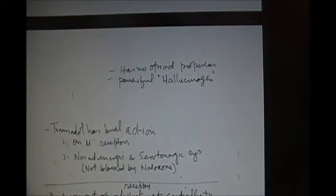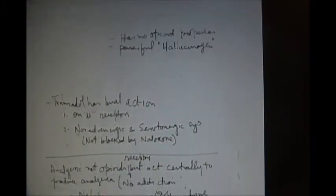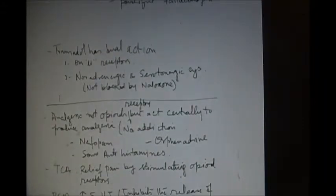The tramadol which is not an opioid but acts on the mu receptors has a dual action. Number one, it acts on the mu receptors. And number two, it acts on noradrenergic and serotonergic systems. That is why it is not blocked by naloxone.